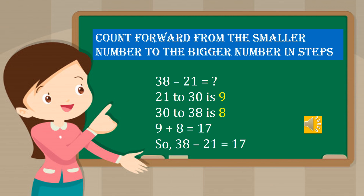Likewise, from 30 to 38, we need to count from 31: 31, 32, 33, 34, 35, 36, 37, 38 — so we have 8. So from 30 to 38, we have the difference 8. Now we need to add 9 plus 8, which is equal to 17. So 38 minus 21 is equal to 17.